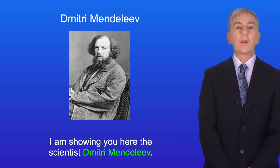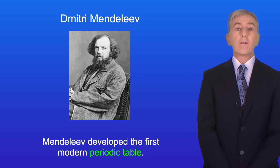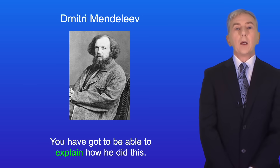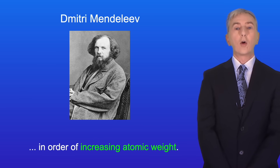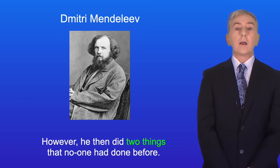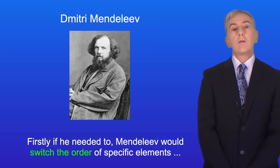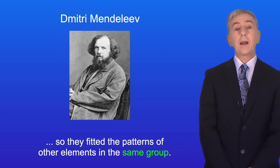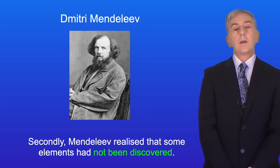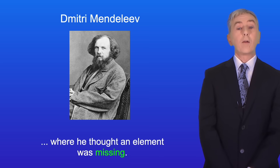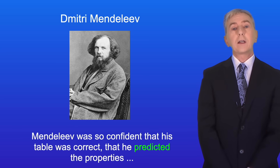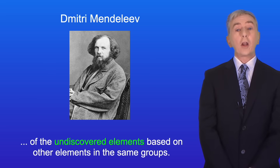The scientist Dmitry Mendeleev developed the first modern periodic table. Mendeleev started by arranging all the elements in order of increasing atomic weight. However, he then did two things no one had done before. Firstly, if he needed to, Mendeleev would switch the order of specific elements so they fitted the patterns of other elements in the same group. Secondly, Mendeleev realized that some elements had not been discovered, so he simply left gaps in his periodic table where he thought an element was missing. Mendeleev was so confident his table was correct that he predicted the properties of the undiscovered elements based on other elements in the same groups.